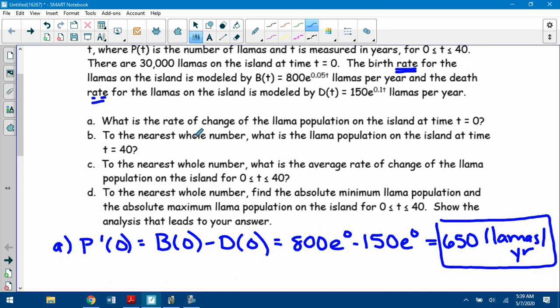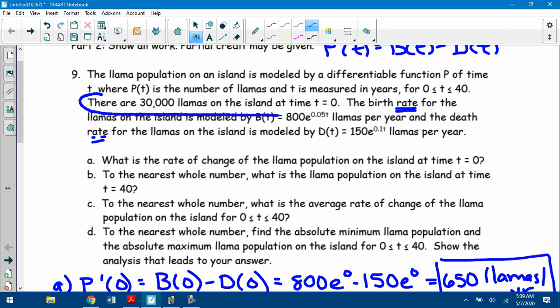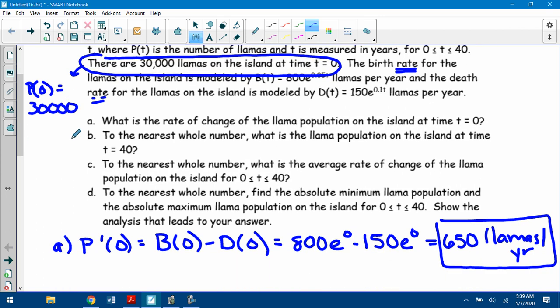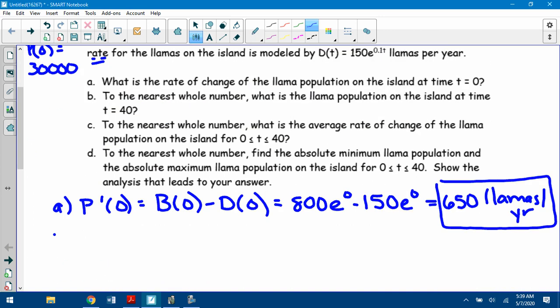Part B, to the nearest whole number, what is the llama population of the island at time t equals 40? Okay, well you know this also. You know there's 30,000 llamas on the island when t equals 0. So that right there tells you that P(0) is equal to 30,000. So this is definitely one of those fundamental theorem questions. This is when you're looking for P(40), you know P(0). The only formula you have is for P prime.